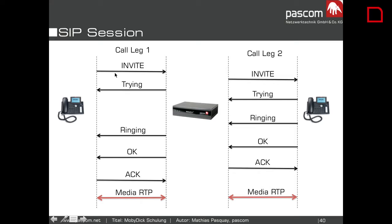This is a very friendly protocol. First you get an INVITE — phone one says 'I invite phone two, I want to talk to phone two.' Then the PBX answers 'I'm trying' and invites the second phone. There could also be something like 'you're not allowed — please send authentication,' and then you would send again an INVITE with authentication.